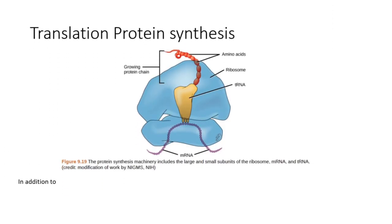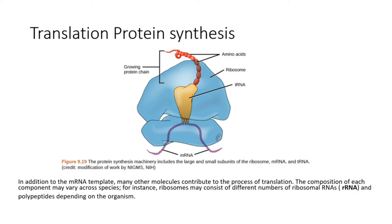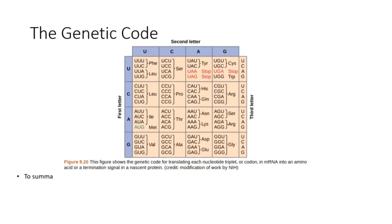In addition to the mRNA template, many other molecules contribute to the process of translation. The composition of each component may vary across species. For instance, ribosomes may consist of different numbers of ribosomal RNAs and polypeptides depending on the organism.